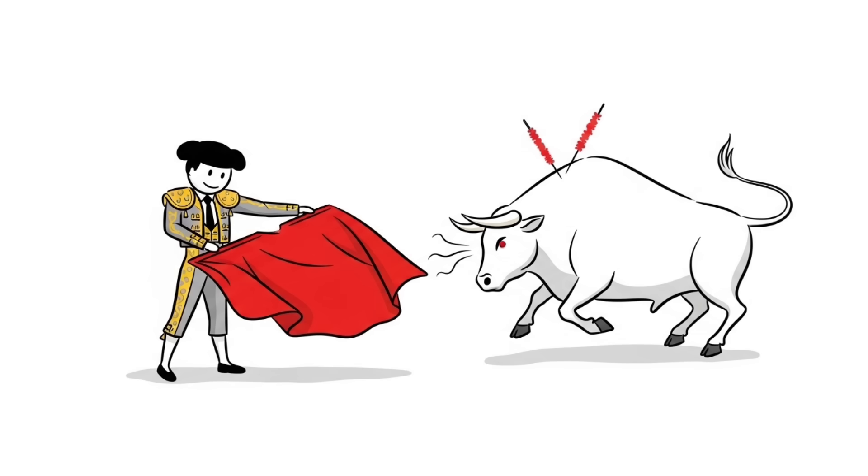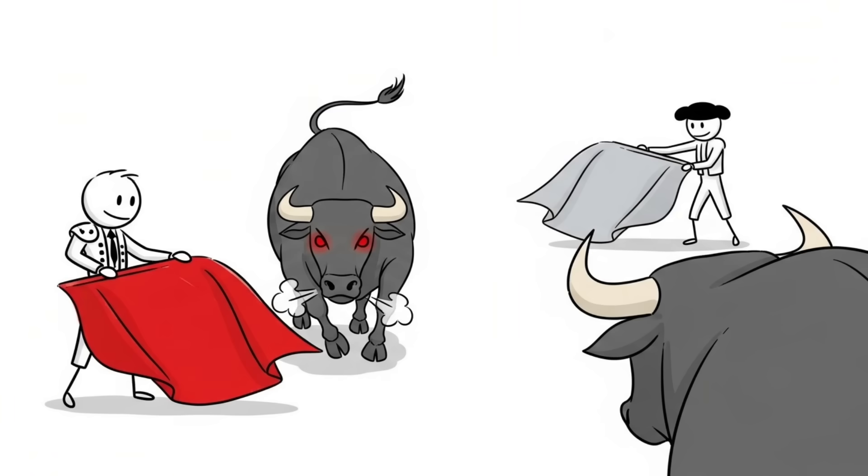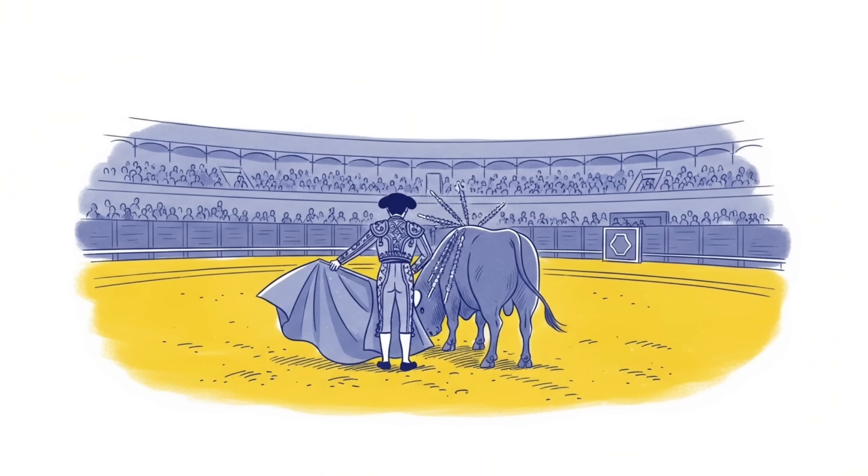Number 9. Bulls don't see red. Every matador waves a red cape to enrage a bull and we've all been taught that red is a color that drives them into a frenzy. That's complete nonsense. Bulls are dichromatic, meaning they are colorblind to red and green. They see the world in shades of blue, violet, and yellow. The matador's cape could be any color and it would have the exact same effect.